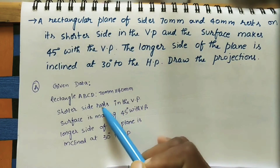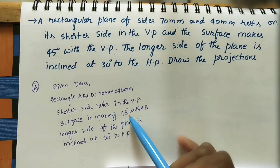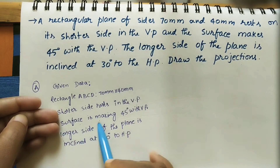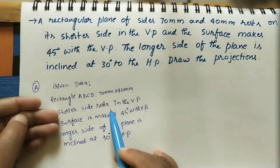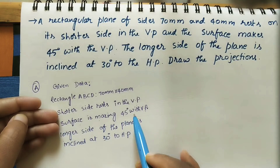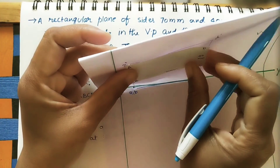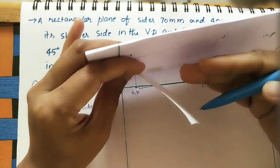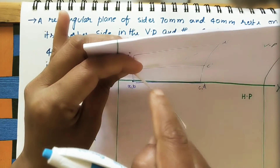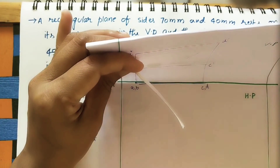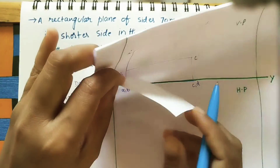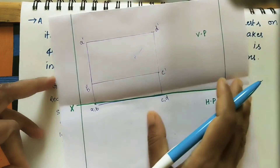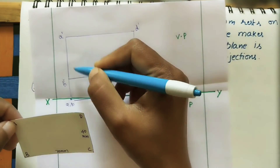Next step: the surface makes 45 degrees with the VP. The shorter side remains in the VP while the surface tilts 45 degrees. In the top view, the line representing the plane tilts to 45 degrees. We work on the next diagram for this second assumption.